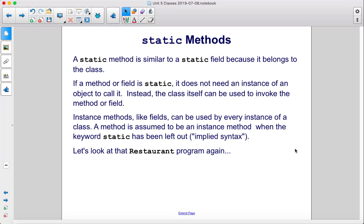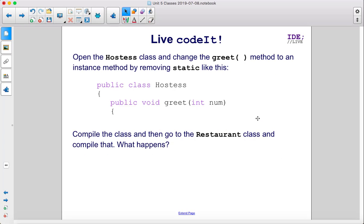Let's look at that restaurant program again. Open the hostess class and change the greet method to an instance method by removing static like this. Compile the class and then go to the restaurant class and compile that. What happens?